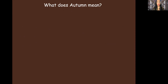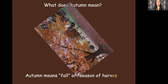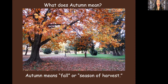So what does autumn mean? What does it mean to you? Autumn means fall or season of harvest. Let's just repeat — season of harvest — just to help you with pronunciation. Season of harvest. Now you try. Good job.